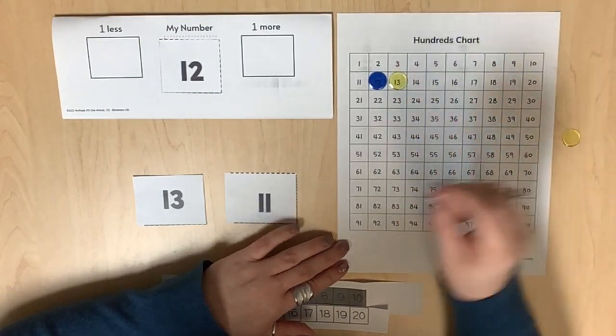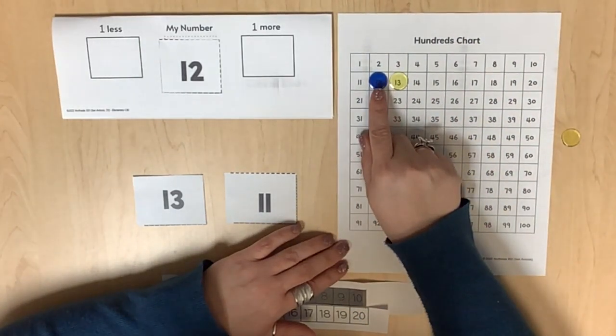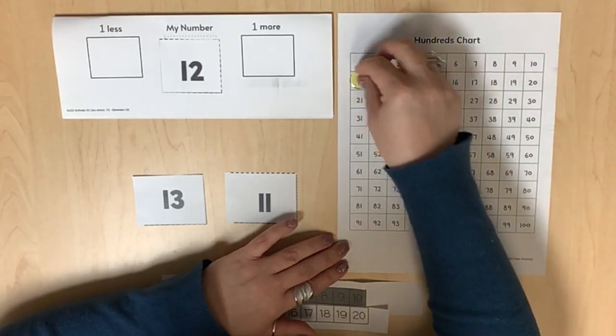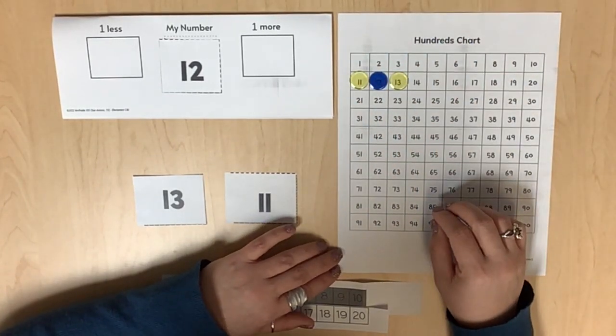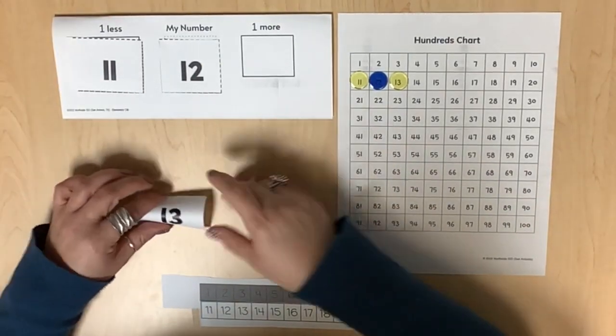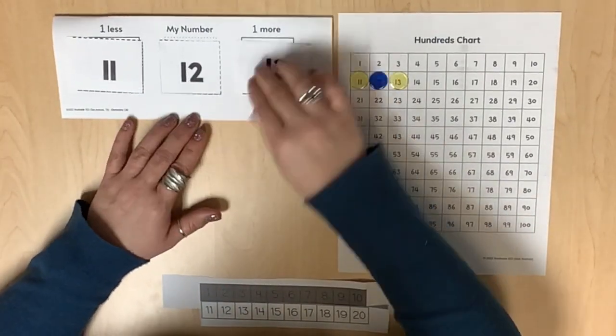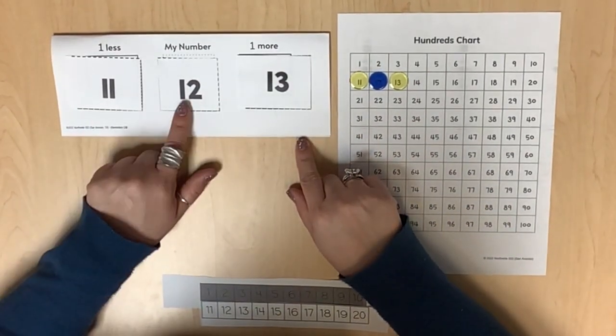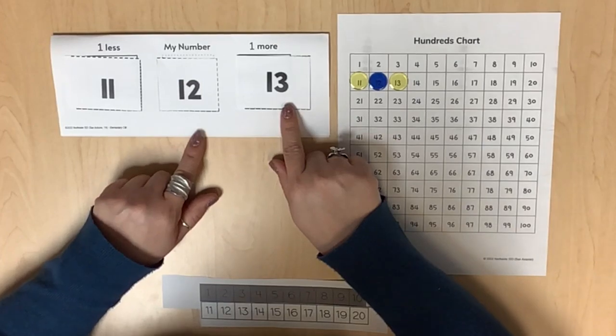Or counting backward from 12 (12, 11), and placing counters on those values. Once these numbers are generated, students are to use comparative language again to describe the numbers. Eleven is one less than 12. 13 is one more than 12.